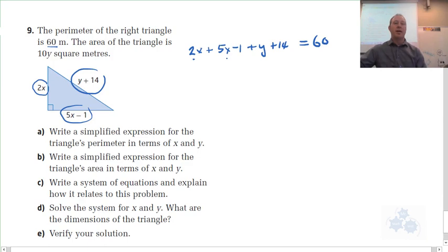So simplify 2x and 5x is 7x. We have negative 1 and 14, so that's plus 13. And then plus y equals 60. So simplify that. It looks like we're good to go for the perimeter. That's A.